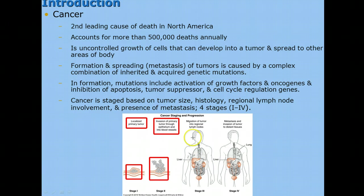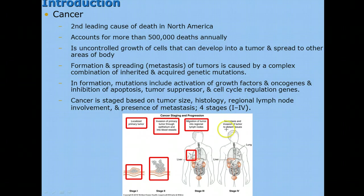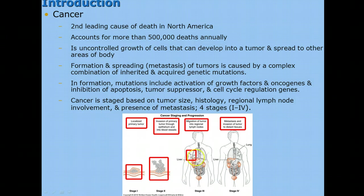Stage 3, we see migration of the tumor into regional lymph nodes. Here the tumor has spread to what looks like an axial type of lymph node in the armpit area. Stage 4 is when there is metastasis — spreading and invasion of the tumor to distant tissues. In this case, the tumor may have been located on the left-hand side of the body and is now found in the lungs and in the liver. That would be considered stage 4.